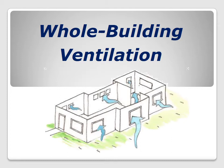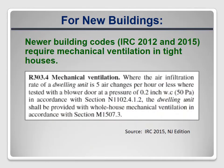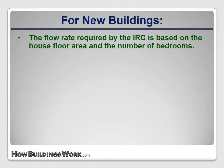The latest building codes call this whole house mechanical ventilation. ASHRAE 62.2 calls it whole building ventilation. Current residential codes address the use of whole building ventilation, but it's only required in particularly tight houses. The flow rate required by the IRC in those tight houses is based on the floor area of the dwelling and the number of bedrooms.